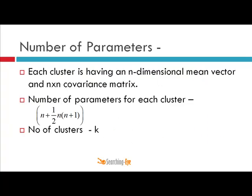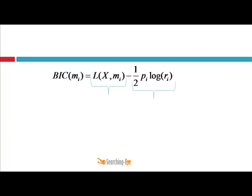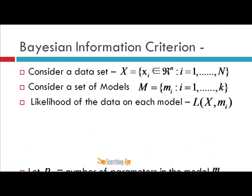Say initially K equals 5. At level 1 we have K clusters, and at level 2 we have K minus 1 clusters. I am calculating the BIC score at level CK and the BIC score at level CK minus 1, and then subtracting the two BIC scores.